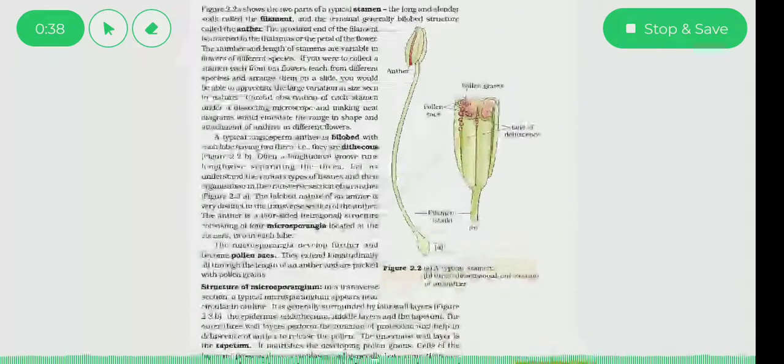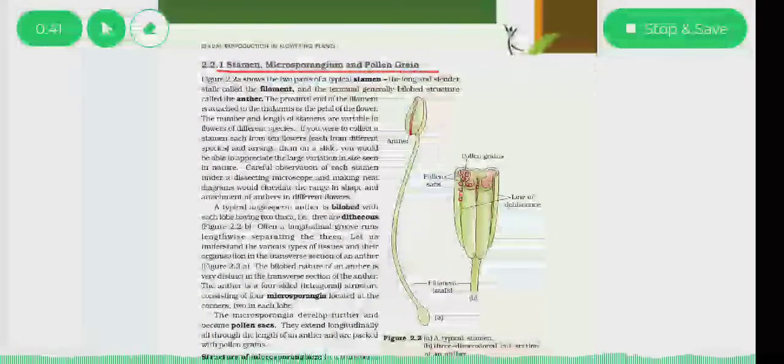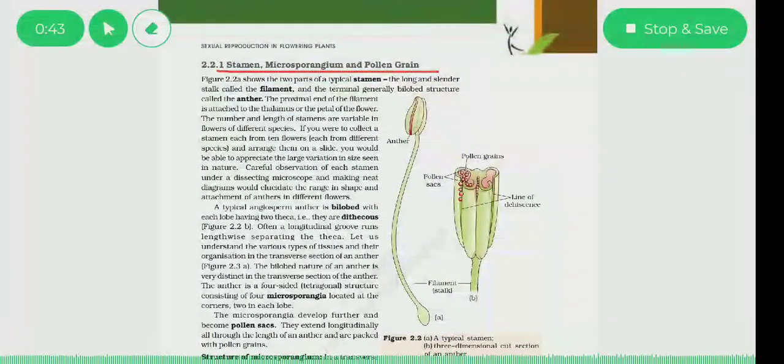As you can see, here we have stamen, microsporangium, and pollen grains. These three parts are the male reproductive parts of the flower.